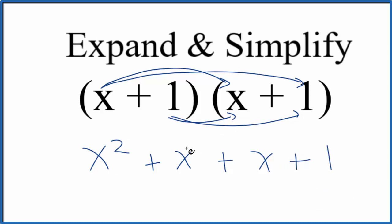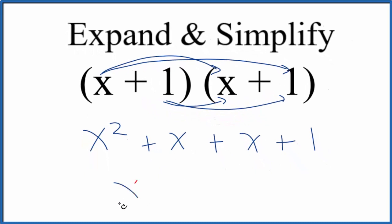We can take this, put these two x's here together, x squared plus 2x plus 1, and that would be the expanded and simplified expression for x plus 1 times x plus 1.